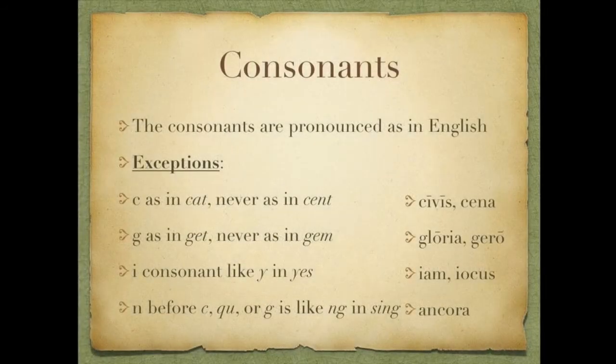Consonants are pronounced, for the most part, just as we pronounce them in English, with a few exceptions. C is always a hard C as in cat — never a soft C like in cent, so we would say civis and cena. The G is also hard like in get — never a soft G like in gem, so we say gloria and gero. The I consonant is like the Y in yes — so iam and iocus.